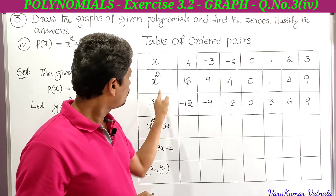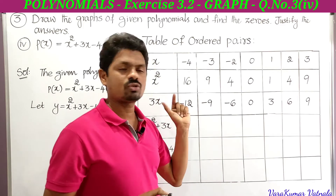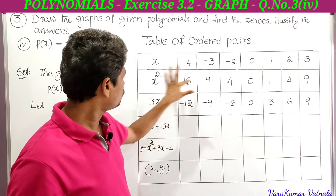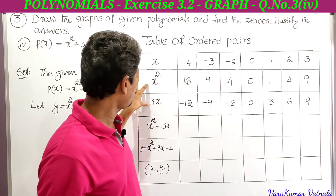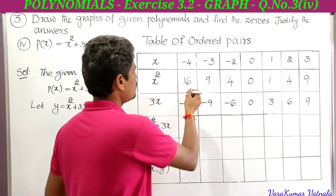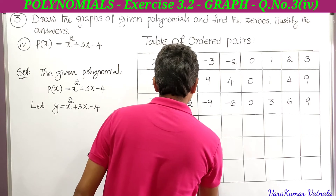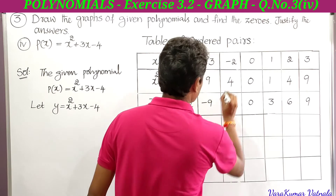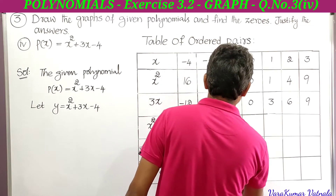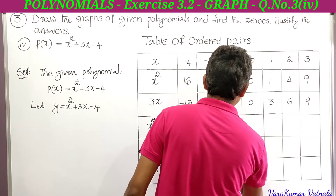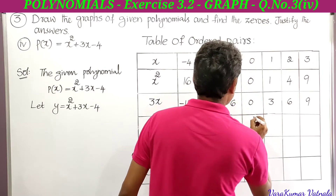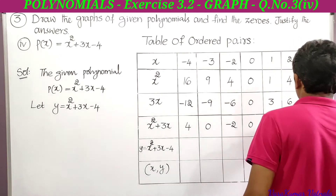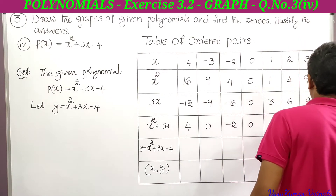Next, for x² + 3x, add the x² values and the 3x values: 16 + (−12) = 4, 9 + (−9) = 0, 4 + (−6) = −2, 0 + 0 = 0, 1 + 3 = 4, 4 + 6 = 10, 9 + 9 = 18. These are the x² + 3x values.